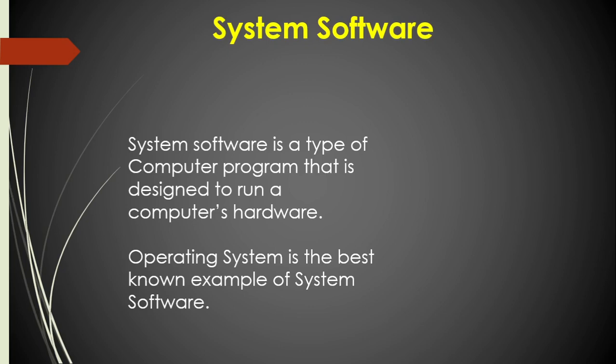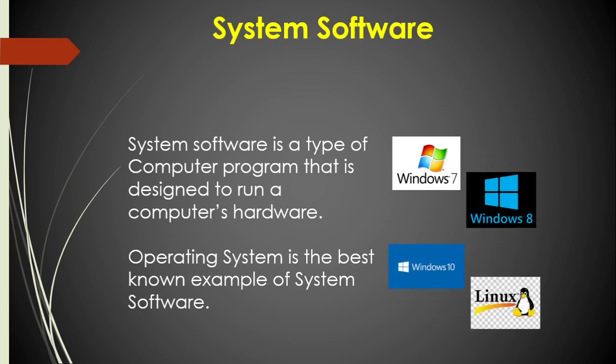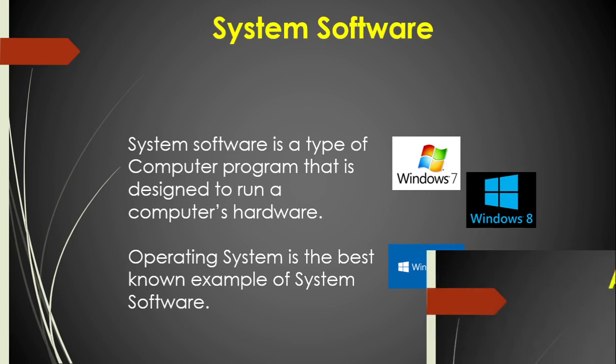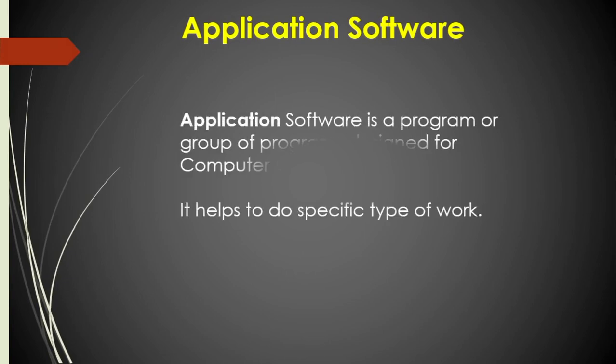The operating system is the best known example of system software. Let's see some examples of operating systems: Windows 7, Windows 8, Windows 10, Linux, Unix, and MS-DOS are other examples of operating systems.